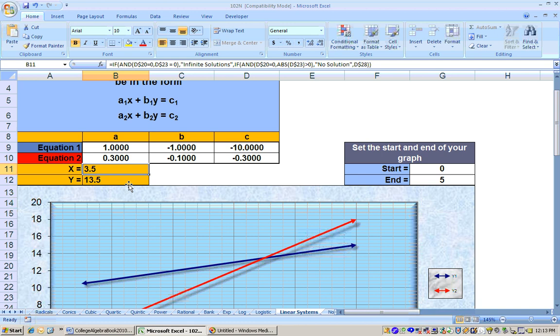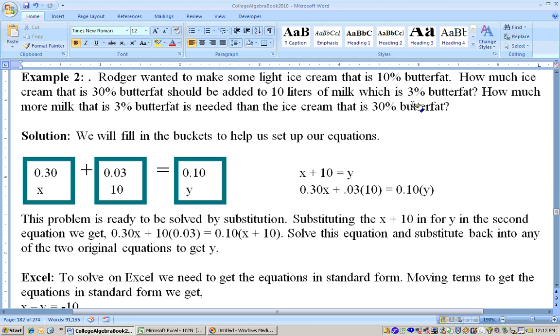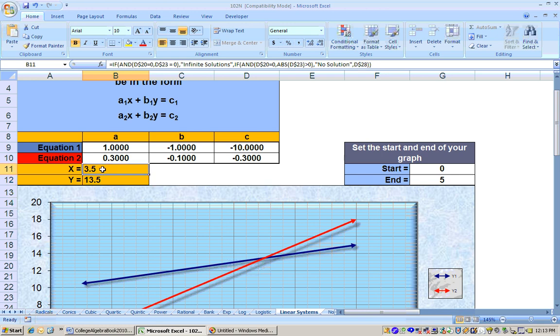So this is how much he needs to add in. This is how much he's going to end up with. Now, to answer the question of how much extra of one does he need than the other, well, he had 10 liters of the milk that is 3% butterfat. And we ended up with 3.5 liters of the other. So if you want to know how much extra he's going to need of the milk than the other one, then we just need to subtract. 10 minus 3.5 is 6.5. But this is the point of solution. That's the point of intersection of those two lines right there. You can see that by changing your viewing window.